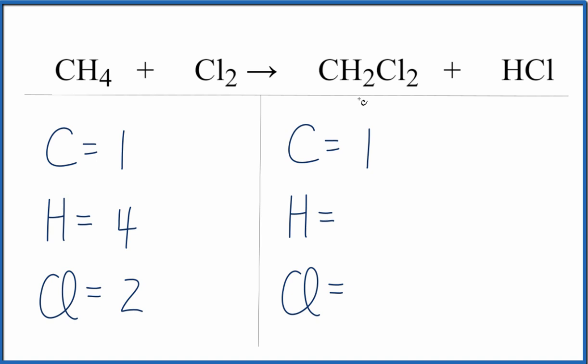We have one carbon, then we have two hydrogens, plus we have this one hydrogen here. That gives us three. And then we have two chlorines here, plus we have one right here. So we have three of those as well.